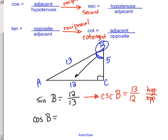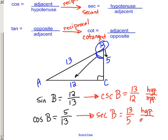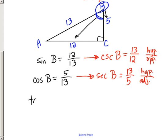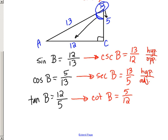The cosine of angle B is the side adjacent to B over the hypotenuse, which is 5 over 13. Its reciprocal function is called the secant of B, which is 13 over 5 — the hypotenuse over the adjacent side. The tangent of B is opposite over adjacent, and its reciprocal is the cotangent of B, which is 5 over 12 — that's adjacent over opposite.